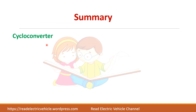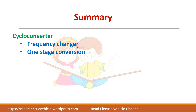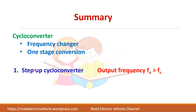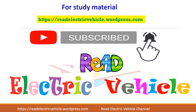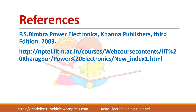In summary: a cycloconverter is a frequency changer that operates in one stage, whereas a DC link converter requires two stages. There are two types — step-up cycloconverter where output frequency is greater than Fs, and step-down cycloconverter where output frequency is less than the supply frequency. If you like the video, subscribe to the channel, and mention any other topics in the comments.